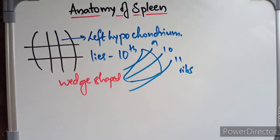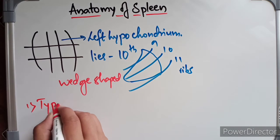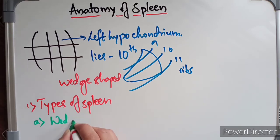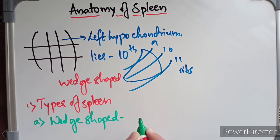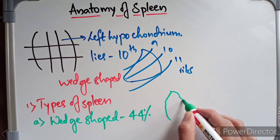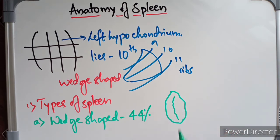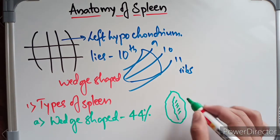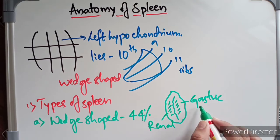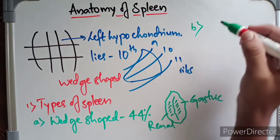There are different types of spleen shapes. The first is wedge-shaped, which occurs in about 44% of individuals. The wedge-shaped spleen has a gastric impression, a renal impression, and an intermediate border.